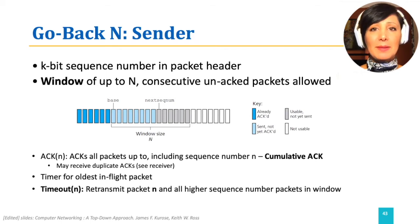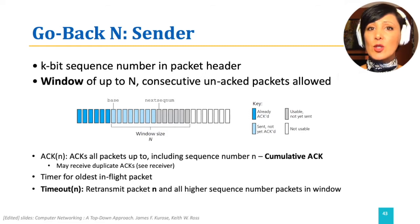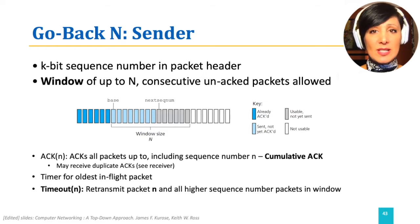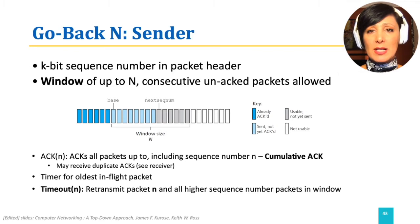To implement pipelining, we need a sequence number range for the packets. Let's assume the number of bits that provide sequence numbers in a packet is k, providing us packet sequence numbers of 0 to 2 to the power of k minus 1.